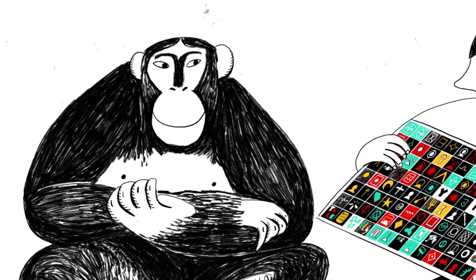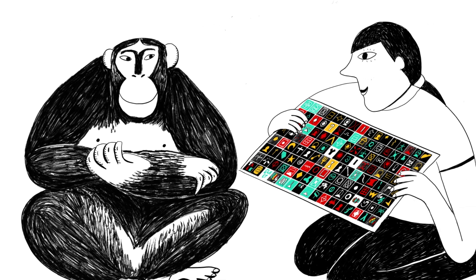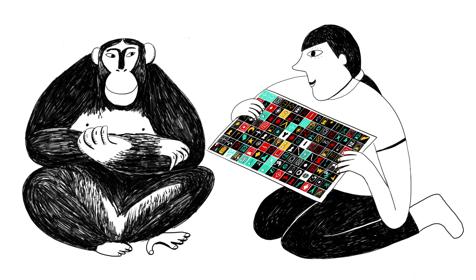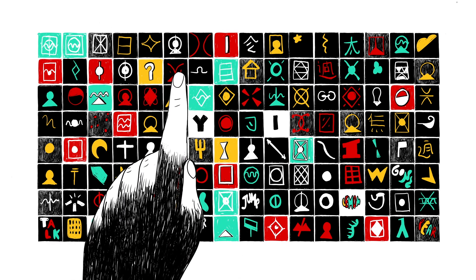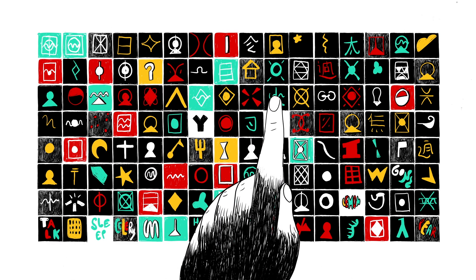In the 1980s, a bonobo named Kanzi learned to communicate with humans to an unprecedented extent, not through speech or gestures, but using a keyboard of abstract symbols representing objects and actions.